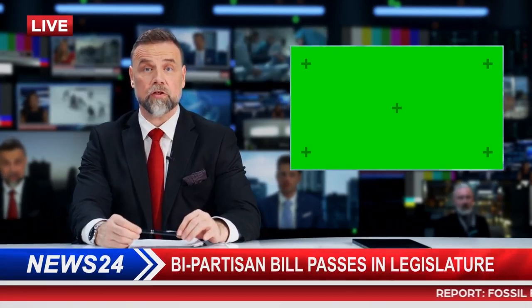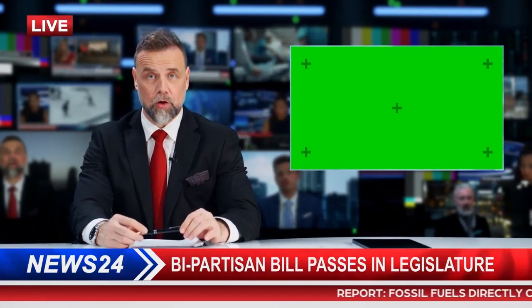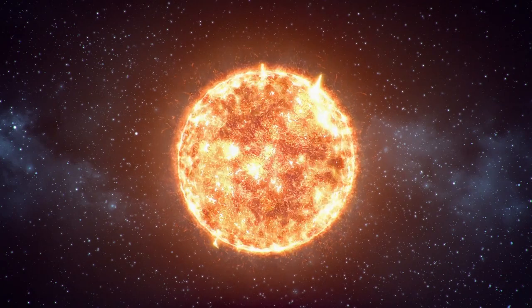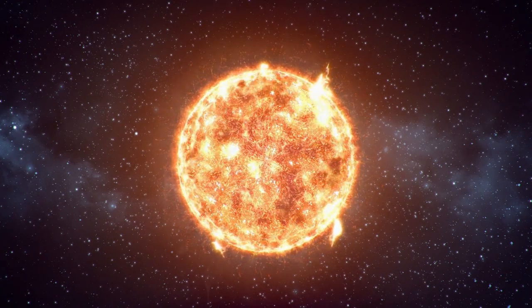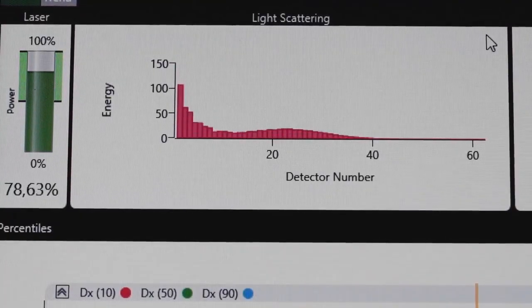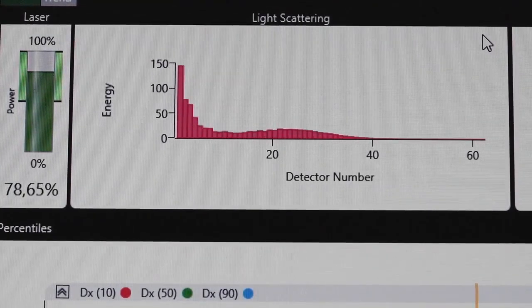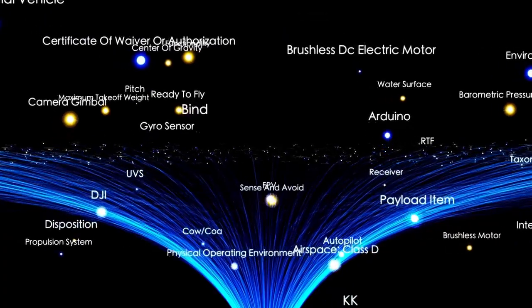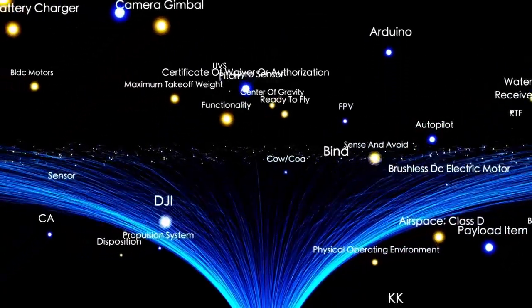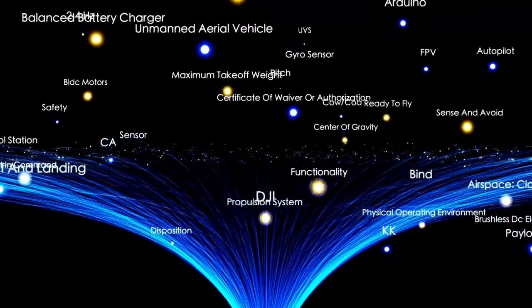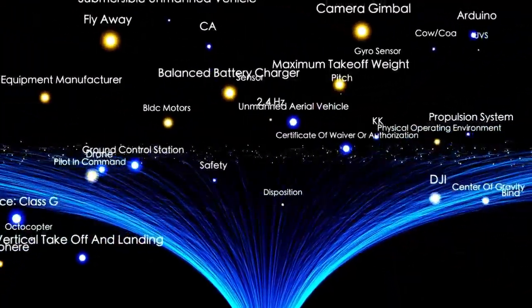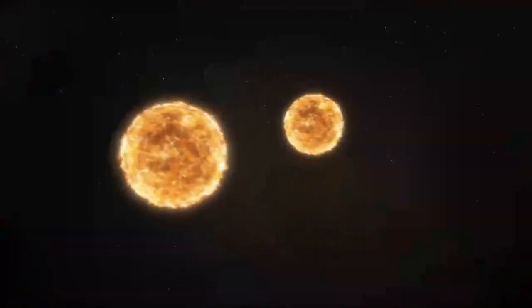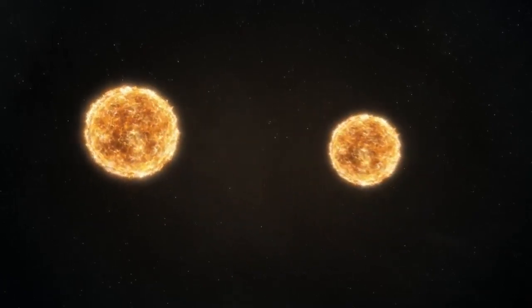Just when things couldn't get stranger, Webb found something even more outrageous. At the heart of one of these ancient galaxies sat a supermassive black hole, weighing more than a billion Suns. In today's universe, that would be astonishing. But in the early universe, it was cosmologically absurd. Black holes are thought to grow slowly, over billions of years, by feeding on gas, dust, and stars. Even the most optimistic growth models can't explain how such a monster could exist within just 400 million years. It would be like finding a fully grown adult who was born an hour ago.